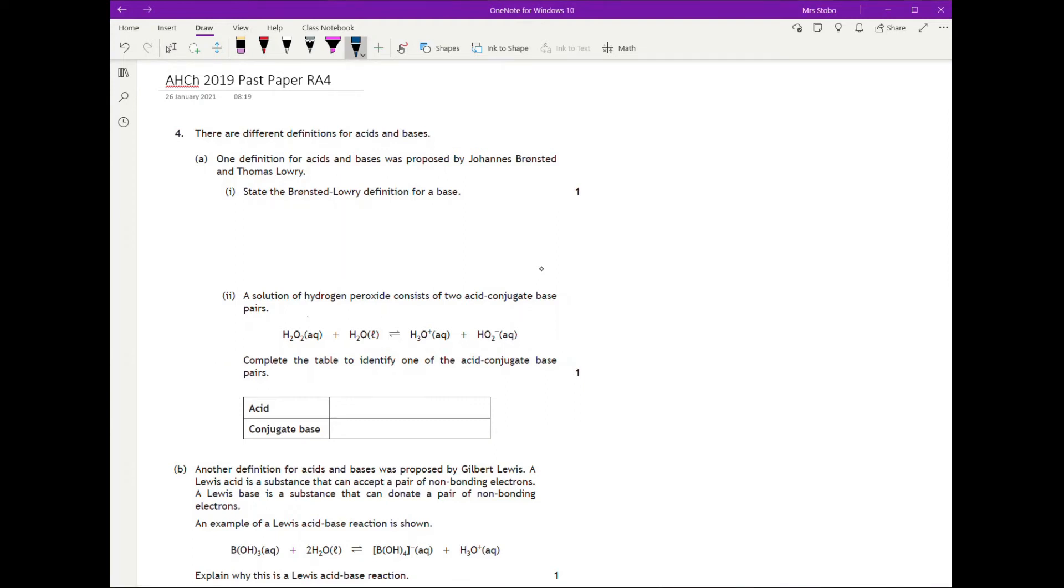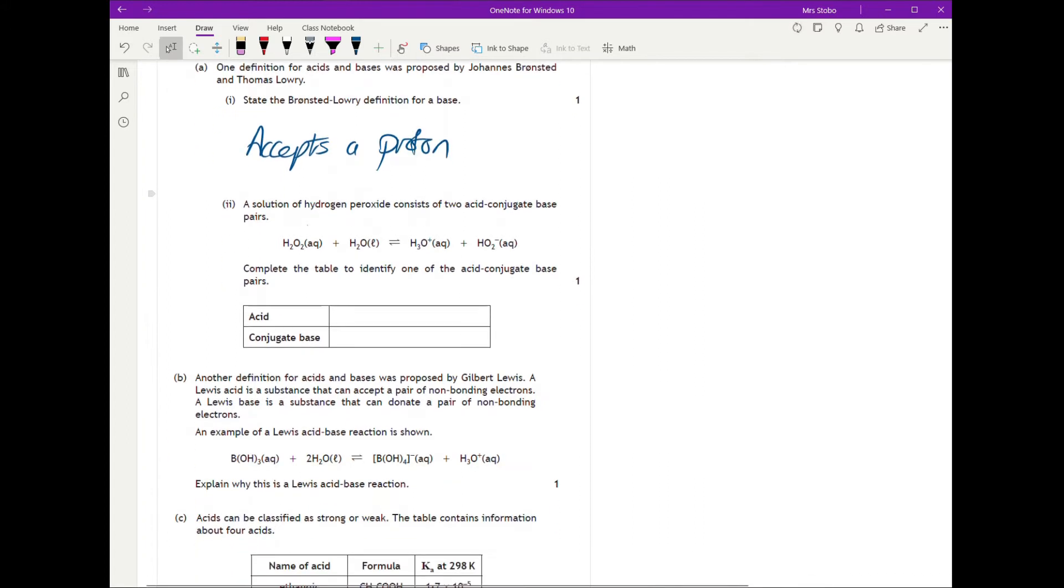So the 2019 paper, question 4, there are different definitions for acids and bases. First one asks you to give the Bronsted-Lowry definition for a base, which is quite simply that a base will accept a proton. So you might have written a proton acceptor or whatever. There are lots of different ways you could get that.